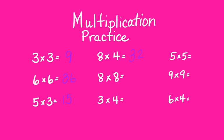Eight times four is 32. Eight times eight is 64. Three times four is 12. Five times five is 25. Nine times nine is 81.